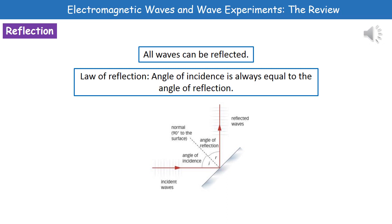When we're thinking about our waves, there are three things that we need to concern ourselves with in terms of their behavior. The first one is reflection. All waves can be reflected. Now we do have the law of reflection, which states that the angle of incidence, so the angle at which our wave comes in at, is always equal to the angle of reflection, the one it bounces off at.